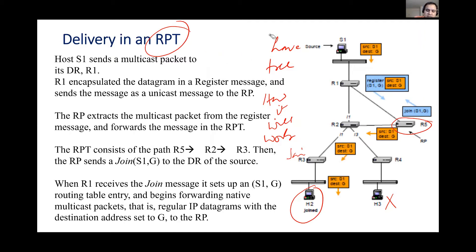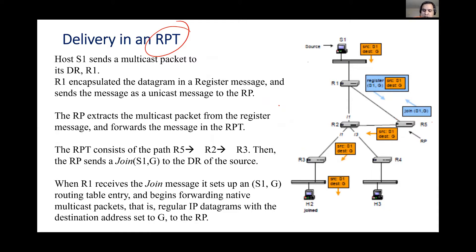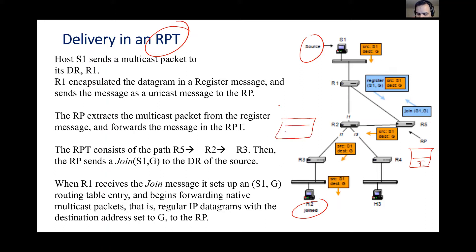Now I'm explaining the delivery process. We already have a tree with one source and one recipient. Even with one recipient, you have a multicast group. Looking at the entries of this router, it has one outgoing interface and one interface going up — this is I1.